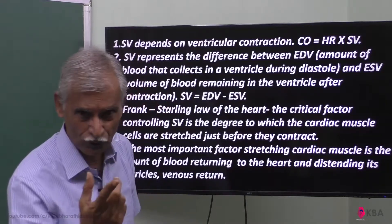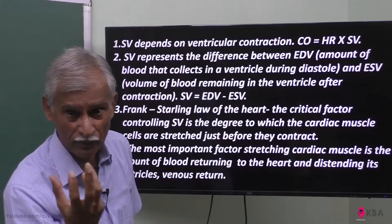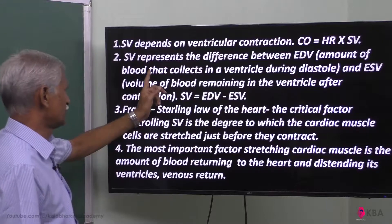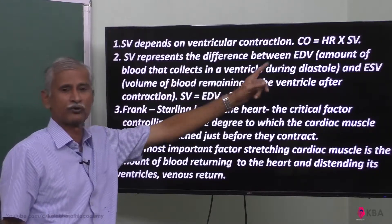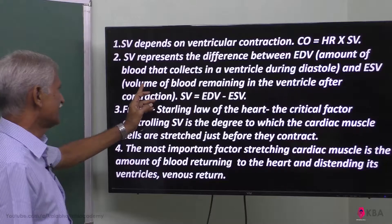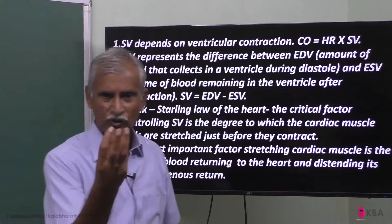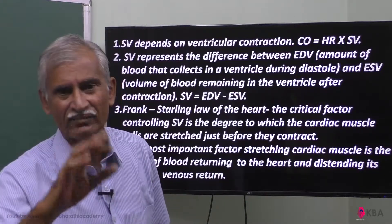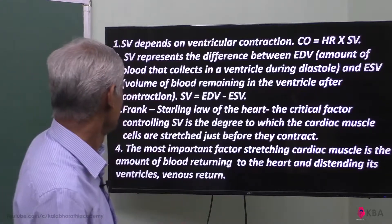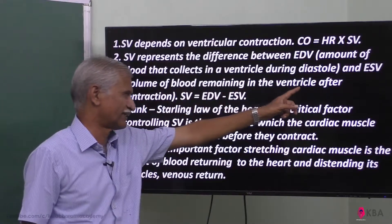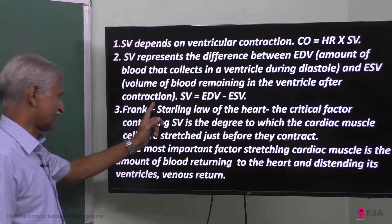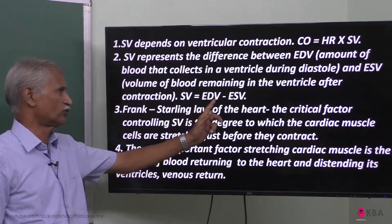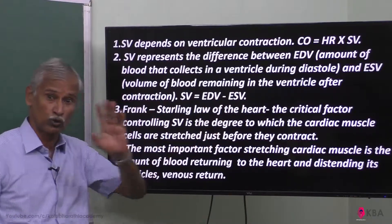The end diastolic volume (EDV) is the amount of blood that collects in the ventricle during diastole. The end systolic volume is the volume of blood remaining in the ventricle after contraction. Therefore, stroke volume equals end diastolic volume minus end systolic volume.